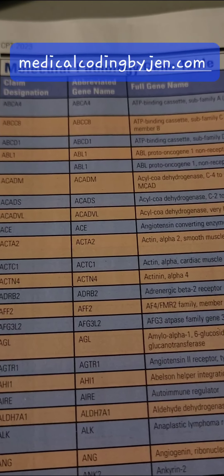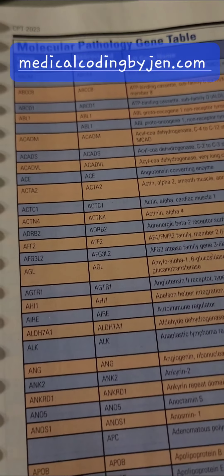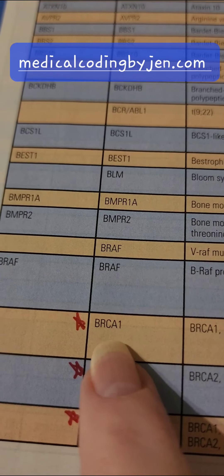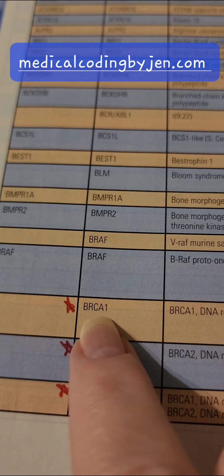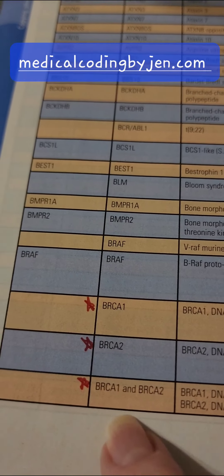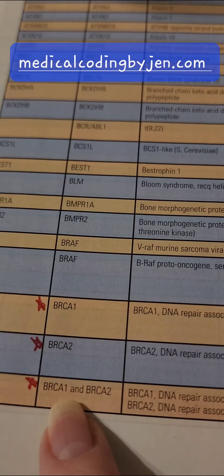Lastly, we'll talk about the gene table in the front of lab and path, before the guideline section. Not everyone knows a lot about it, but it can be very helpful — especially when they're talking about gene tests for breast cancer. There are three right here; be sure to note these.